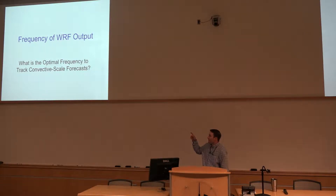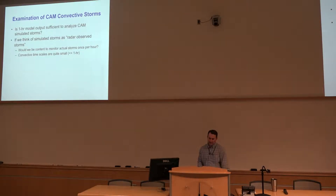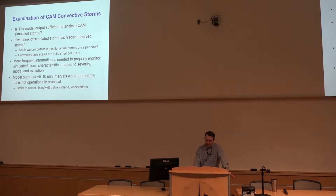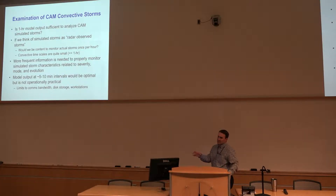Some of those old examples showed how they put a ring or circle around top-of-the-hour storm attribute information like UH, but that's not necessarily ideal. We'd like to have a little more information. Obviously storms are evolving at much faster timescales than every hour, so how do you get that type of information? Can we output model grids every five or ten minutes? In theory it's possible, but when talking about operational systems and sending those types of grids, it's just not practical.